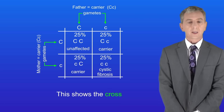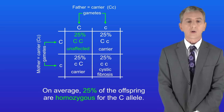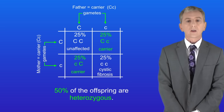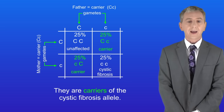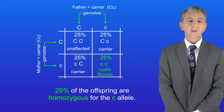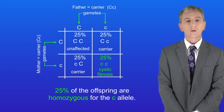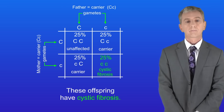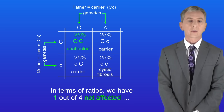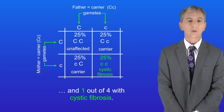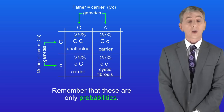Here is the cross. On average 25% of the offspring are homozygous for the capital C allele — in other words they're not affected at all. 50% of the offspring are heterozygous, meaning they are carriers of the cystic fibrosis allele. And 25% of the offspring are homozygous for the lowercase c allele — these offspring have cystic fibrosis. In terms of ratios: one out of four not affected, two out of four carriers, and one out of four with cystic fibrosis. Remember that these are only probabilities.